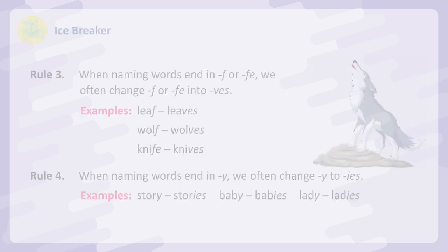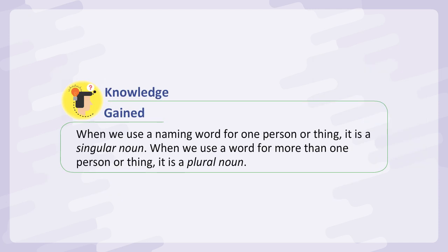Knowledge Gained: When we use a naming word for one person or thing, it is a singular noun. When we use a word for more than one person or thing, it is a plural noun.